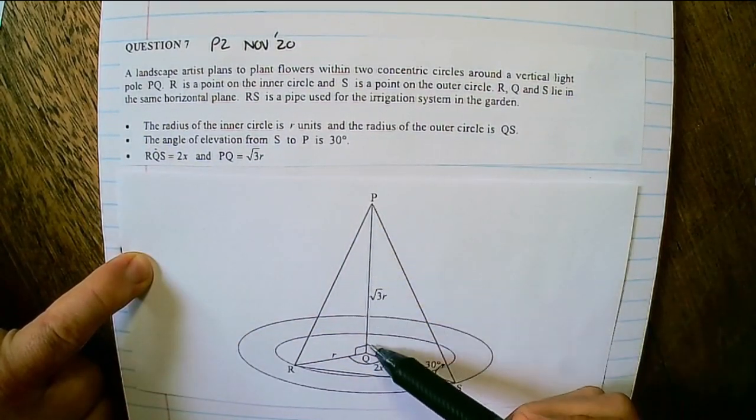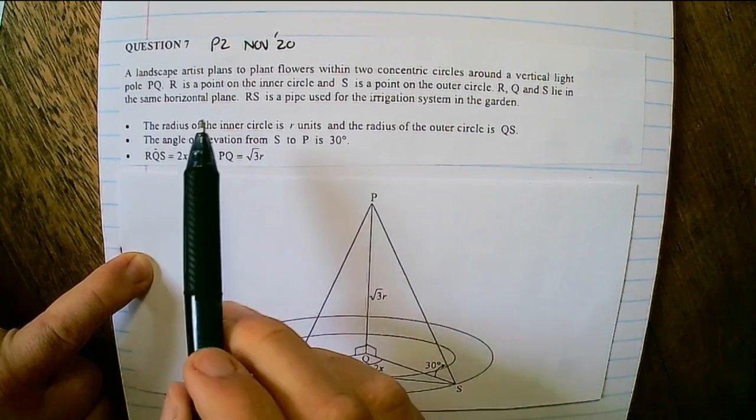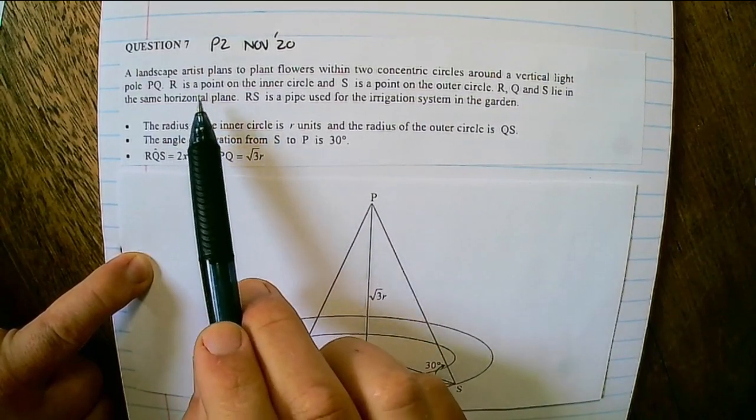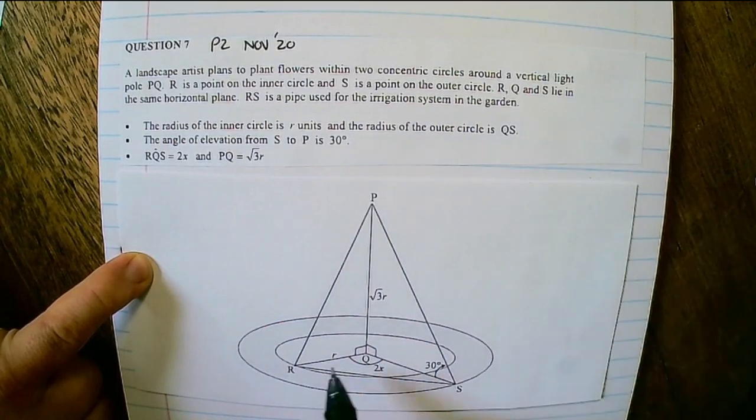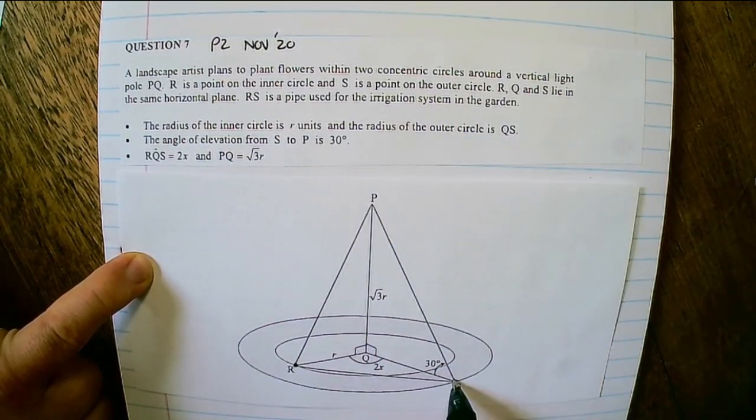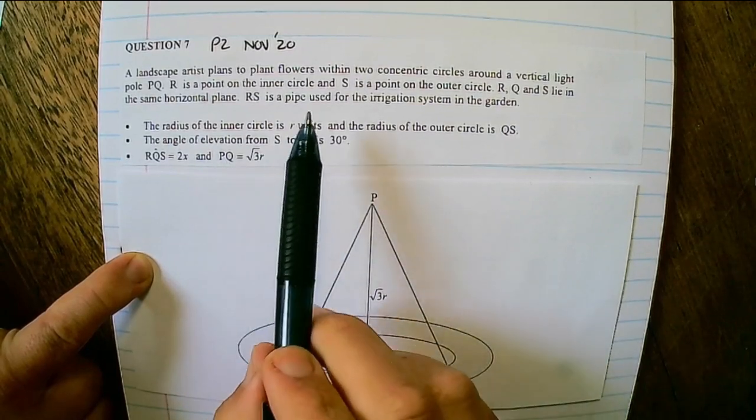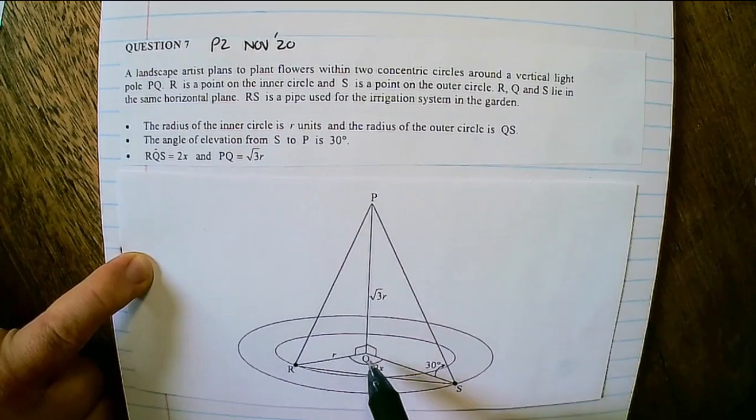So PQ is a light pole and he's planning to plant flowers within those two concentric circles. R is a point on the inner circle and S is a point on the outer circle. R, Q and S lie on the same horizontal plane.